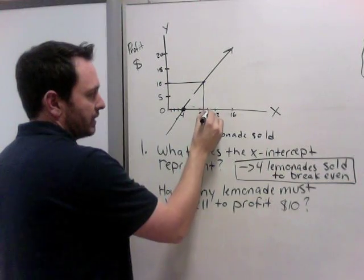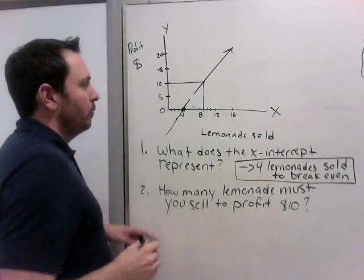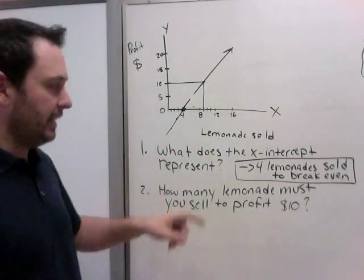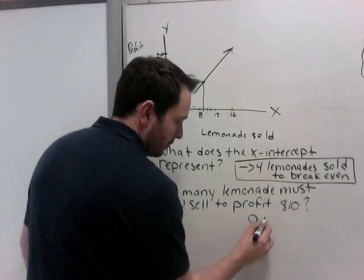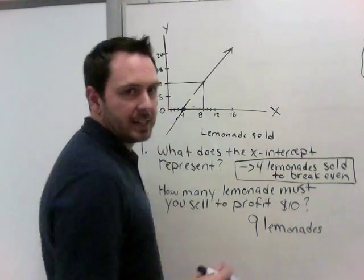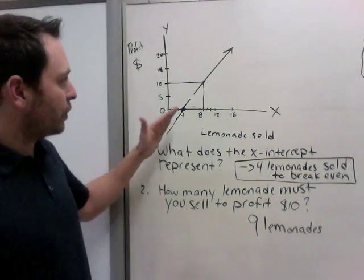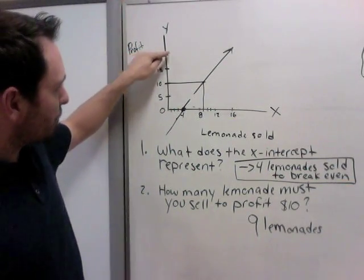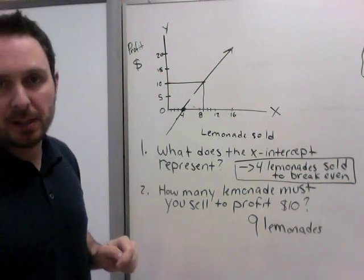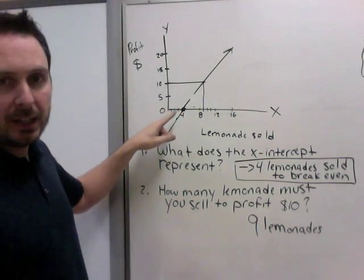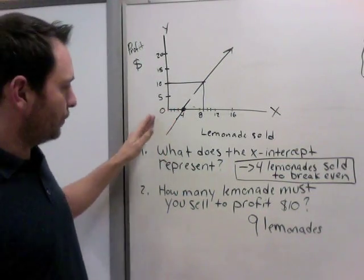So 9 lemonades. So this part of the lesson is, can you look at a graph and can you interpret what certain points on it mean? So at $20 profit, you had to sell a certain amount of lemonades. At 4 lemonades, you're just breaking even. Anything less than 4 lemonades, you're losing money.